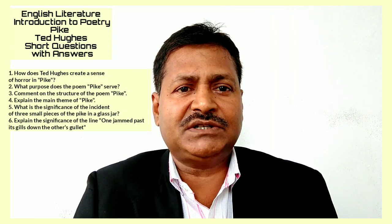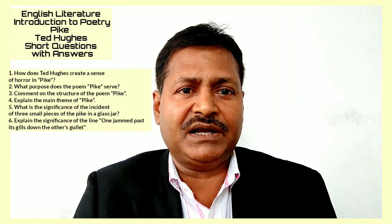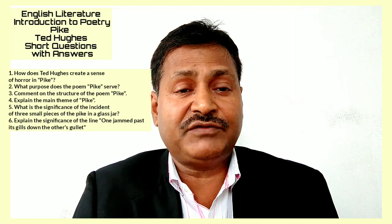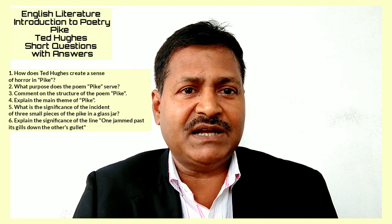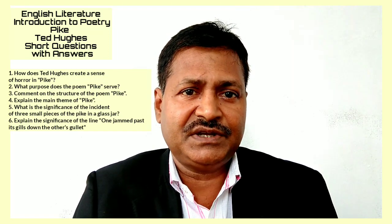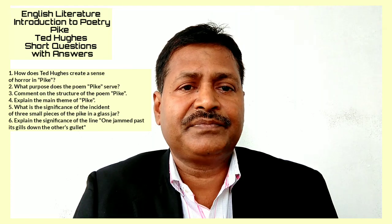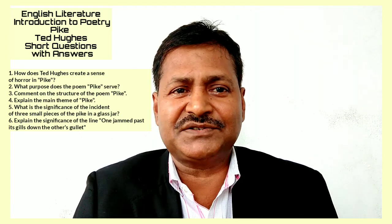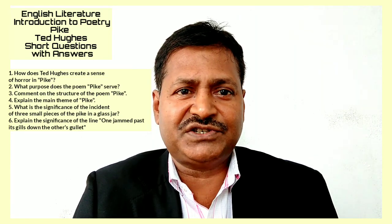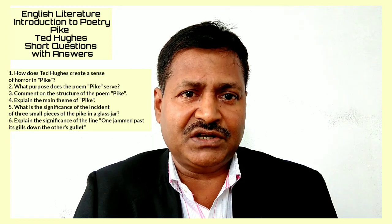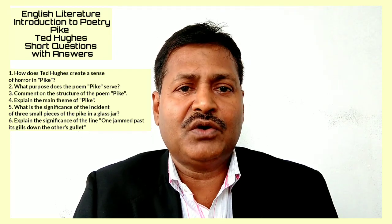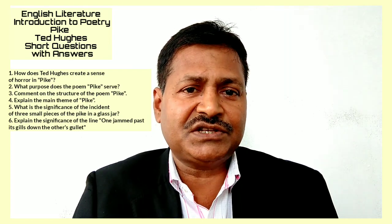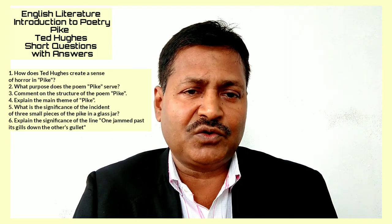Question 3: Comment on the structure of the poem Pike. Pike is a poem of 44 lines divided into 11 stanzas, each consisting of four lines. It can roughly be divided into three parts. First, two stanzas have been used for the physical description of the pike. From stanzas three to seven have been used to suggest its inborn qualities.